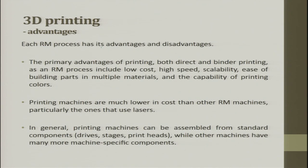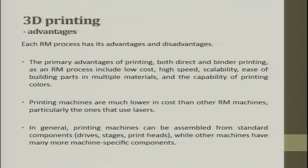Each rapid manufacturing process has its advantages and disadvantages. The primary advantages of printing — both direct and binder printing — as an RM process include low cost, high speed, scalability, ease of building parts in multiple materials, and the capability of printing in color. All these things are possible in 3D printing, which gives it a major edge over others. When you use a laser you cannot easily generate color, but here you can easily generate color because you are mixing it with the binder. The printing machines are much lower in cost than other RM processes, particularly those that use lasers.